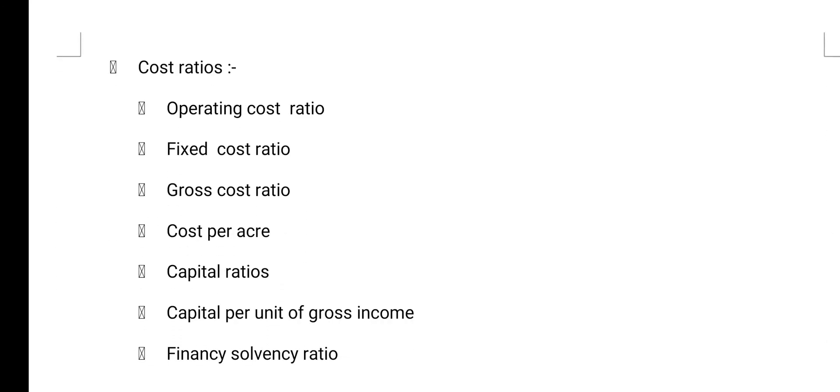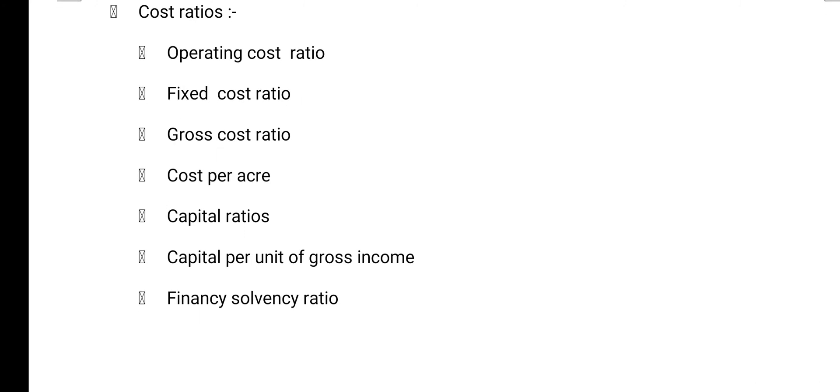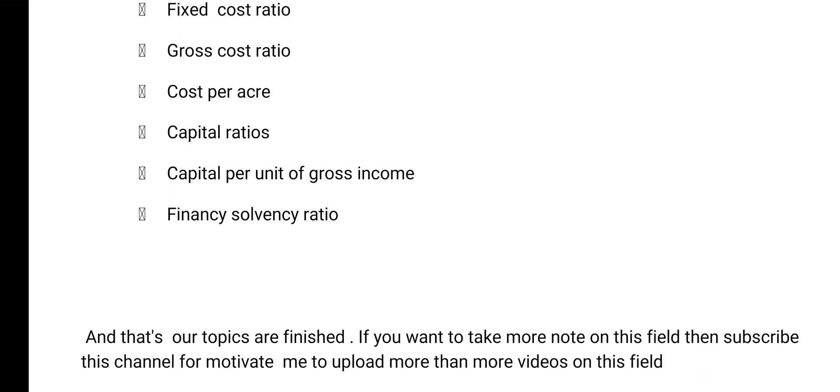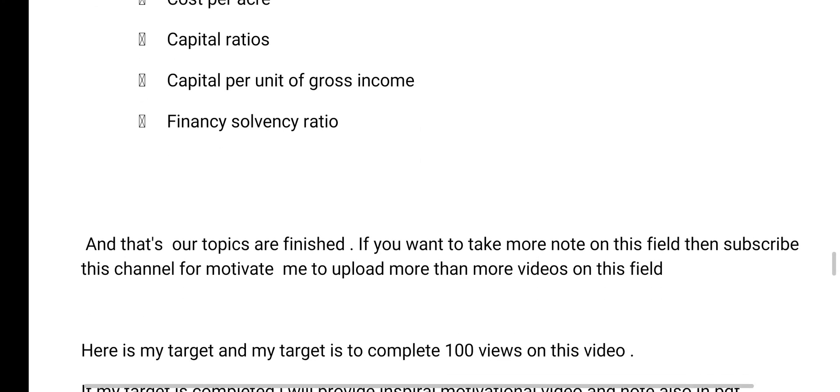The second is cost ratios. It includes operating cost ratio, fixed cost ratio, gross cost ratio, cost per acre. Capital ratios: capital per unit of gross income, financing solvency ratios. And that's our topics are finished.